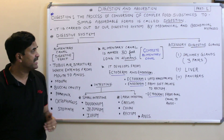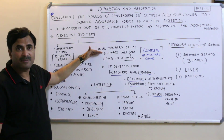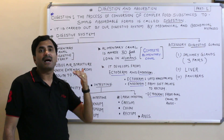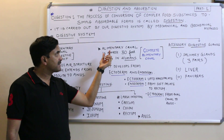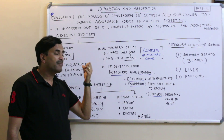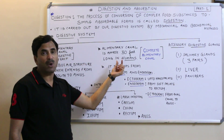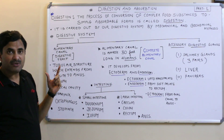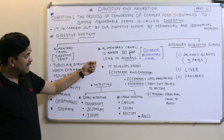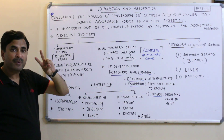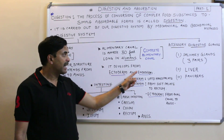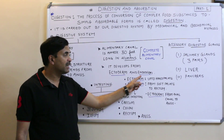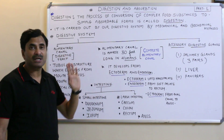The length of the alimentary canal — data varies in different books — but in human beings it is approximately 30 feet long. You must also know the origin of the alimentary canal. It develops from two embryonic layers: one is known as the ectoderm and another is known as the endoderm.